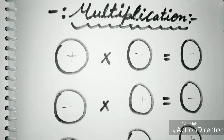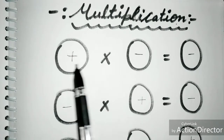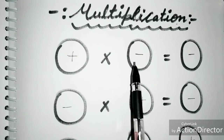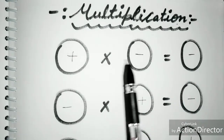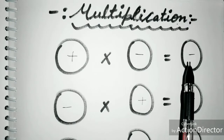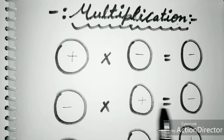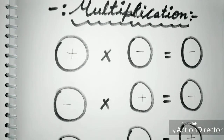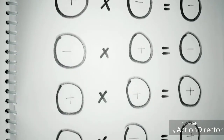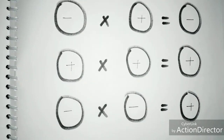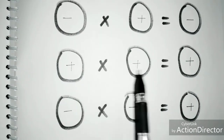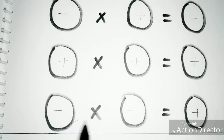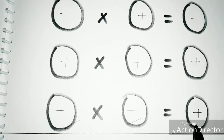Now we learn about multiplication of symbols in integers. When we multiply plus by minus it gives minus; plus times minus gives minus; and minus times plus gives minus. Plus times plus gives plus, and minus times minus equals plus.